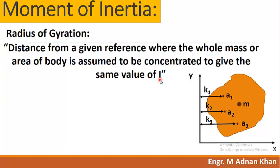In simple terms, you can say that it describes how compactly or otherwise the material in the area of cross-section is distributed around the center of gravity. The value of radius of gyration depends upon its distance from the center of gravity.